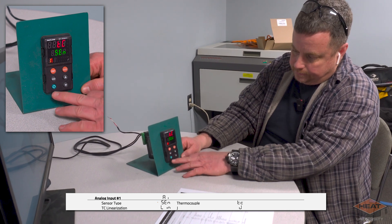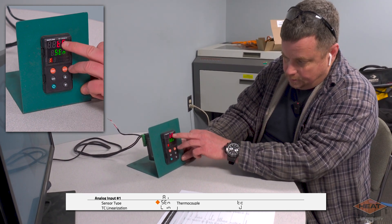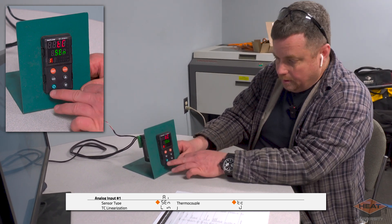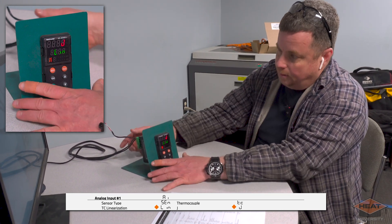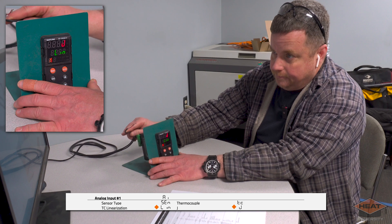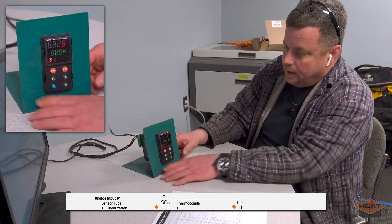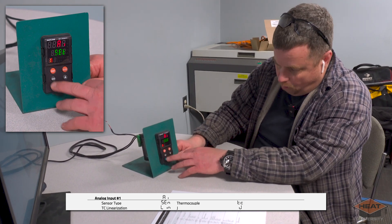Now we'll hit the cycle button and our sensor type is thermocouple. We're going to hit the cycle again and right now it's a J thermocouple, which is what we have set up. Now I'm going to back out one.